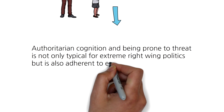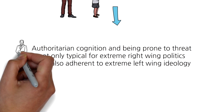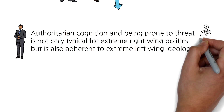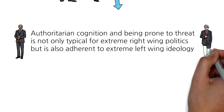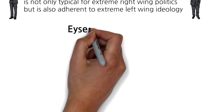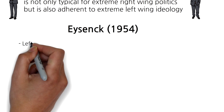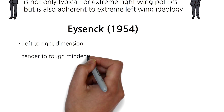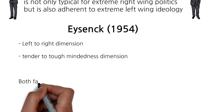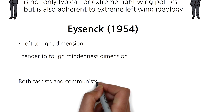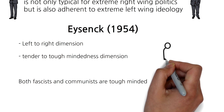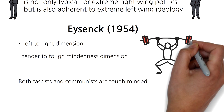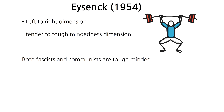So what is extremism theory? Extremism theory sets out that authoritarian cognition and being prone to threat is not only typical for the extreme right-wing side of the political spectrum, but also for adherents to extreme left-wing ideology. Eysenck in 1954 said that there were two independent dimensions of political ideology: the left-to-right dimension and the tender-to-tough-mindedness dimension. Eysenck suggested that both fascists and communists are tough-minded — they are both extremists, authoritarian, anti-democratic, and anti-humanitarian. These two dimensions were based on quantitative research and factor analysis.